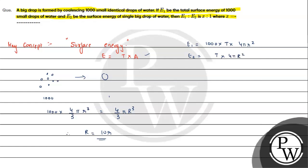Now dividing the expressions, E1/E2 will be equal to... T will cancel, 4π will cancel, so we get 1000r²/R². We can write this as 1000r²/(10r)² = 1000r²/100r². After canceling, the answer has to be 10.